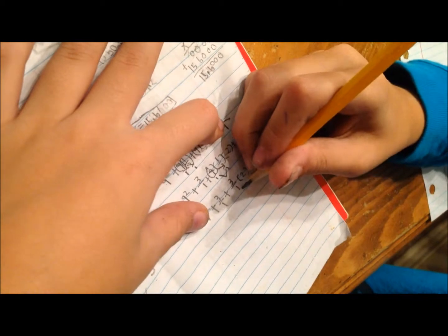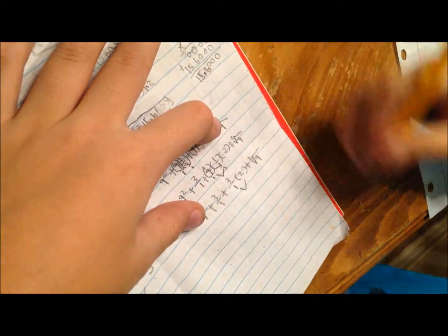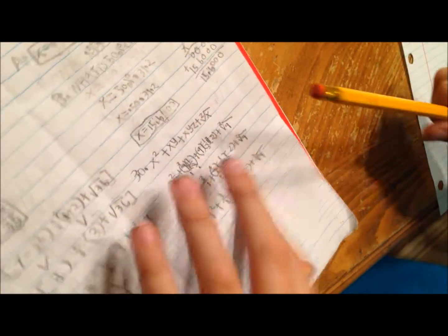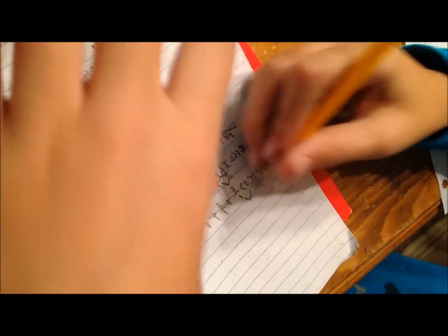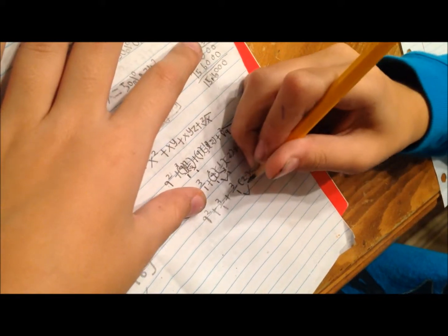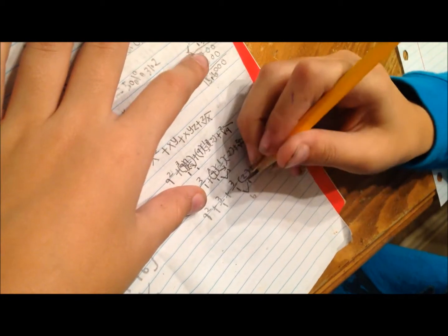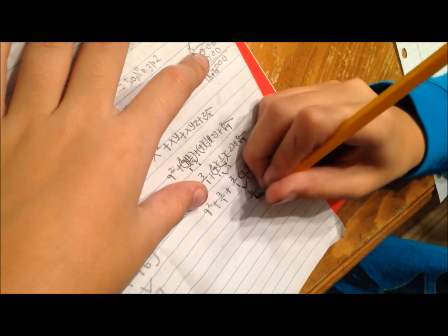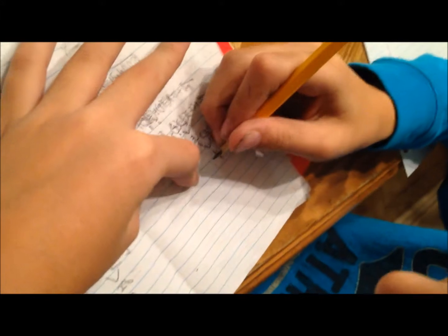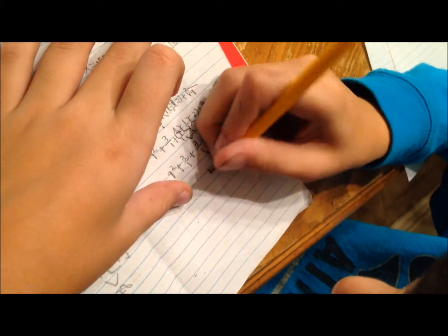Now, we need to do the times. Times comes before plus. So, now we have to put this over 1. So, it is 6 over 1. Now, we bring everything else down.